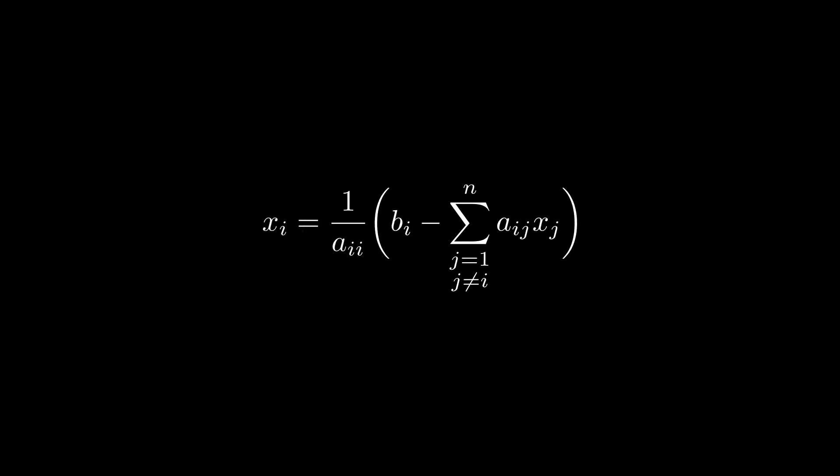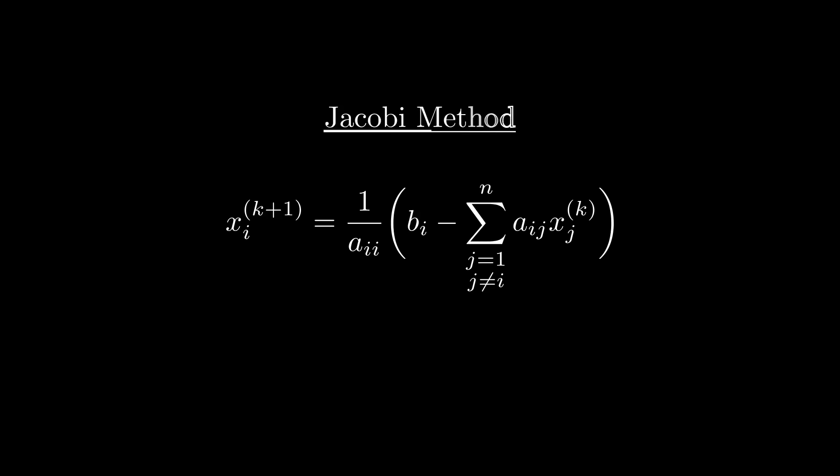The Jacobi method is an iterative algorithm, meaning that we are trying to get closer and closer to our solution over a few cycles. The k indicates the cycle we are in. And while xk plus 1 is what we currently calculate, xk is simply the last solution computed. This gives us the element-wise notation for the Jacobi method.